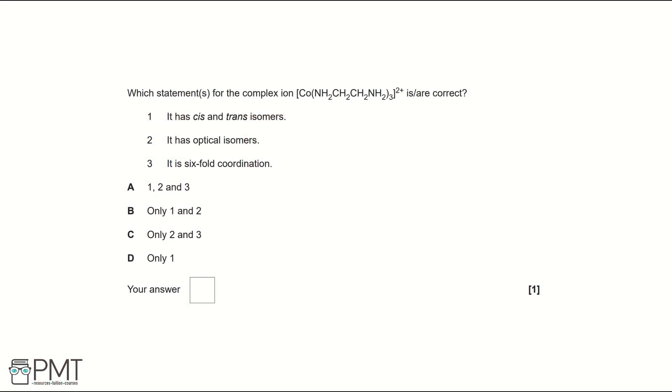Which statement or statements for the complex ion [Co(NH2CH2CH2NH2)3]2+ is or are correct? One: it has cis and trans isomers. Two: it has optical isomers. Three: it is six-fold coordination. Option A: one, two and three.